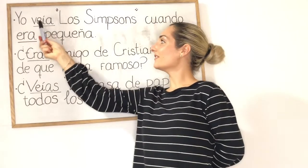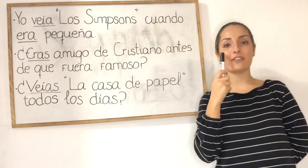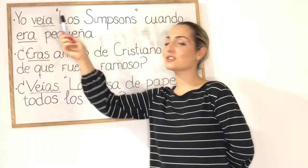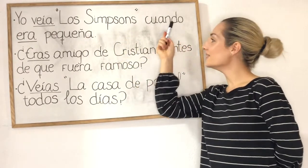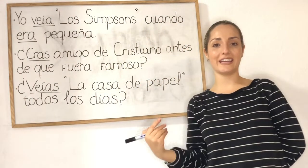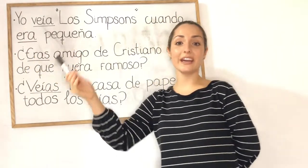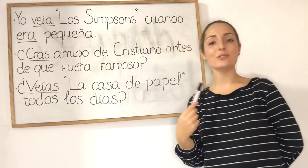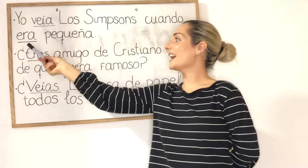Our first example: yo veía los Simpsons cuando era pequeña. Yo veía los Simpsons cuando era pequeña. This means: yo veía - I used to watch or I used to see; los Simpsons - the Simpsons; cuando - when; era. As you can see, I didn't write down yo era, because in Spanish you don't have to say yo era. If you just put era, as it is already conjugated, that would be completely the same thing. Era pequeña - I was little. So this means: I used to watch the Simpsons when I was little.